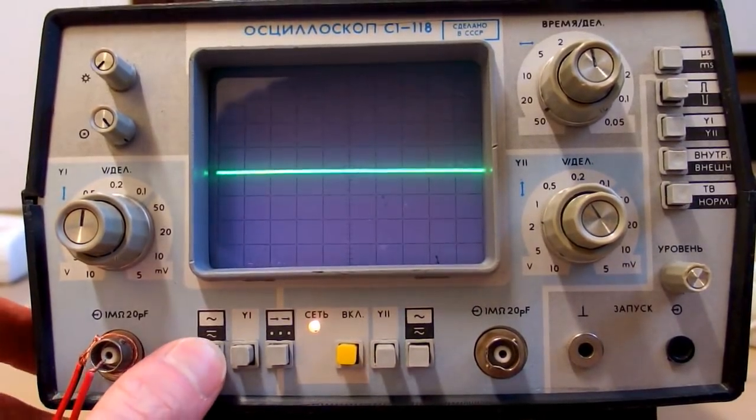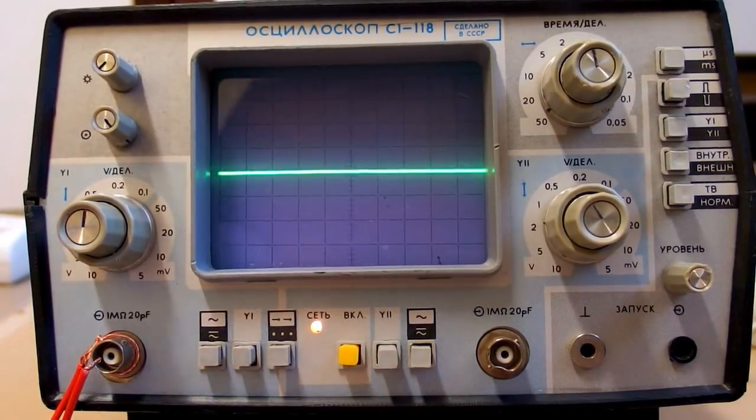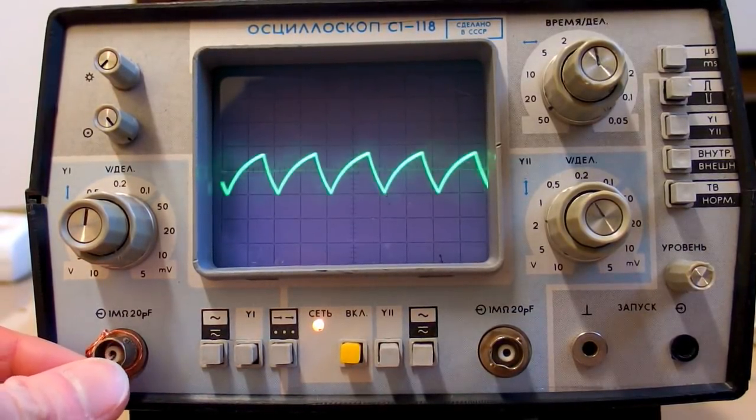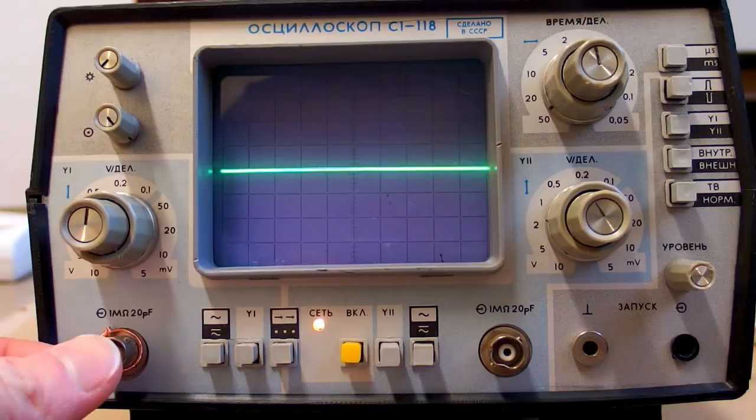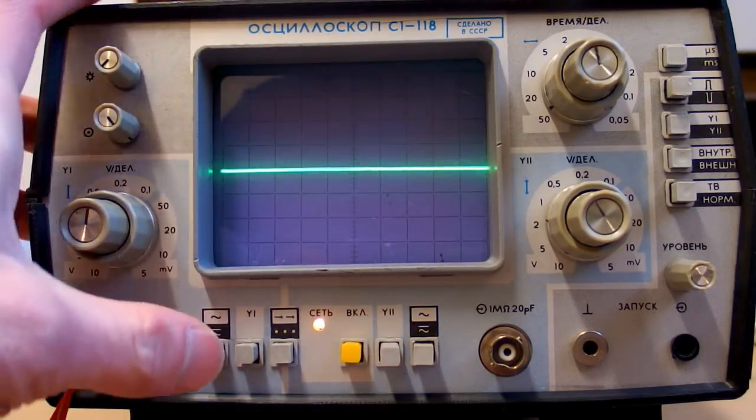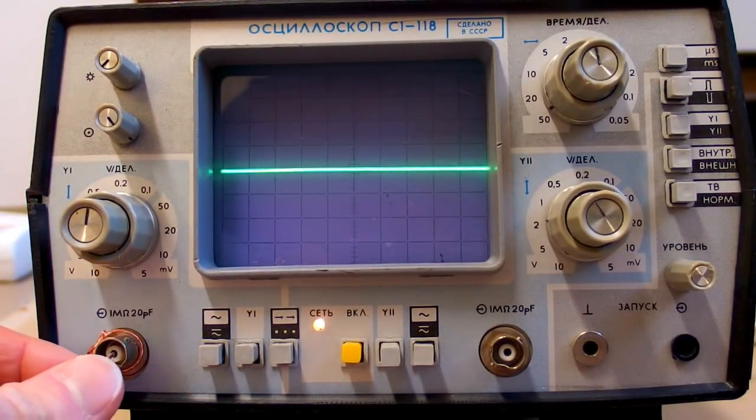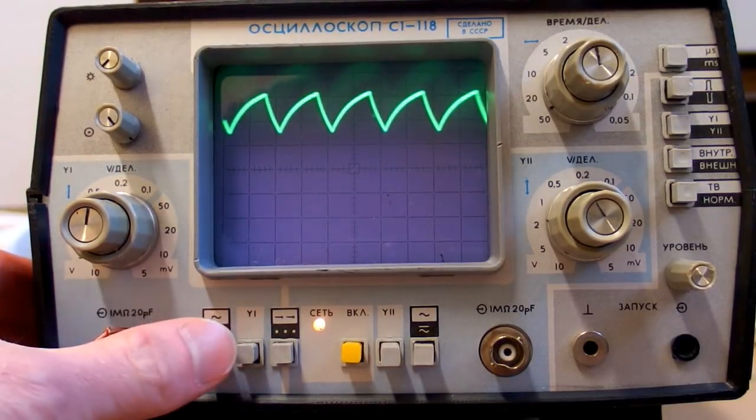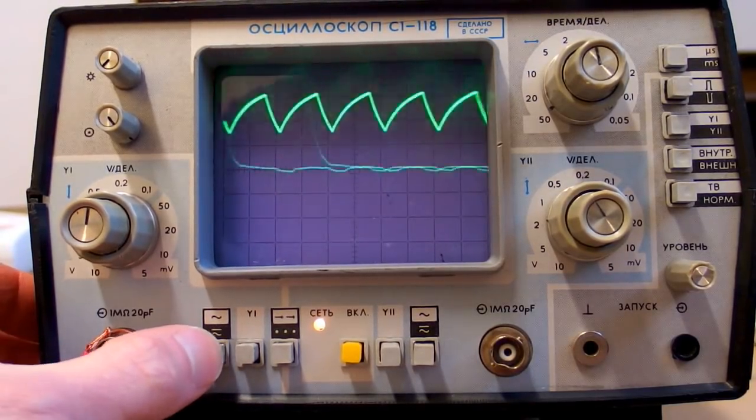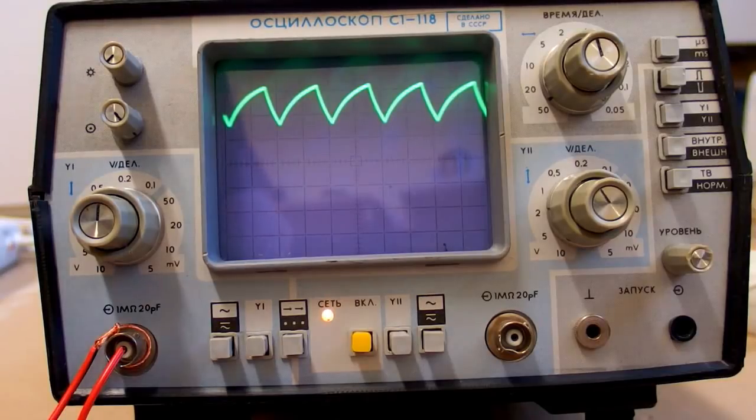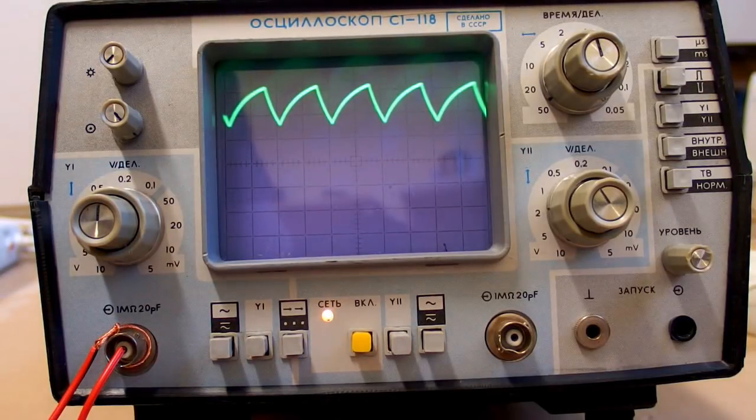And this switch allows you to display only the AC portion of the signal. Like this. Or also the DC portion of it. Like this.